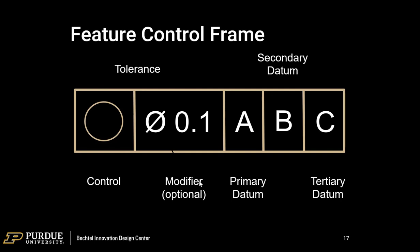Here's a basic control frame. This is a circularity control — this is how much circularity we're allowing, and here are the datums we reference. Every control frame has the same basic structure. Sometimes there are a couple of stacked control frames, which talk about either end of the maximum and minimum material conditions, or that there are multiple types of geometric controls that apply to one feature.